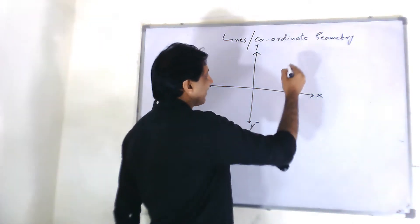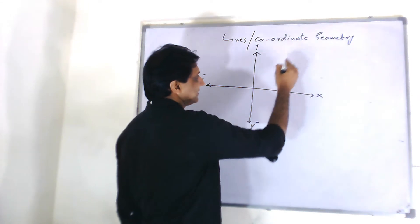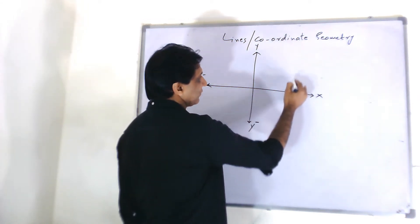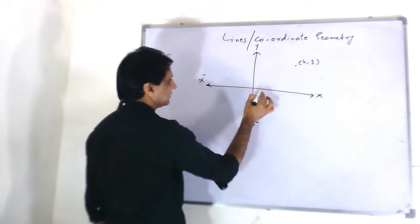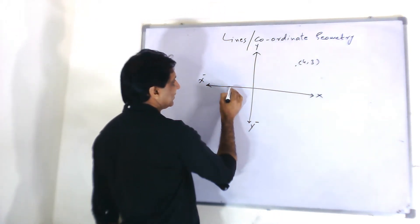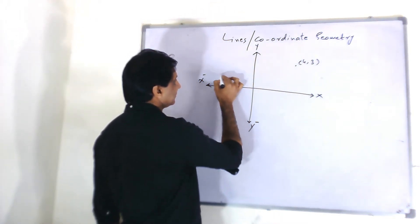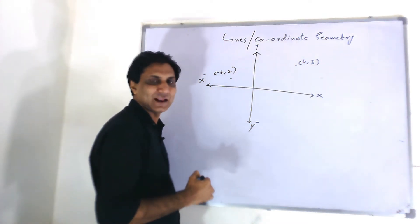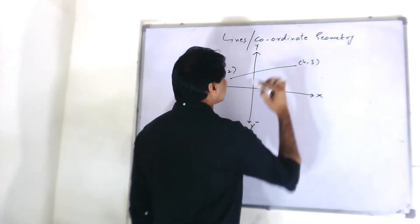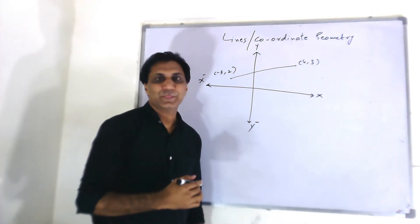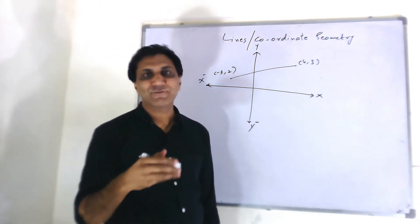If I draw a line having two points like 4, 3 and minus 3, 2. This is a line, line segment. I join it. Now, I need to find out several things.